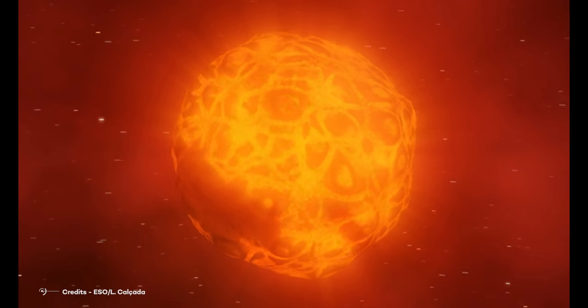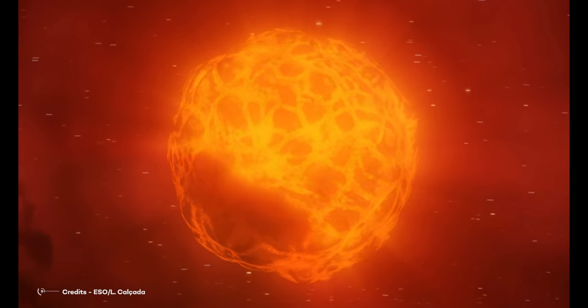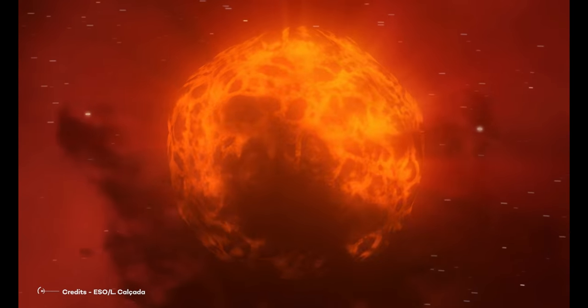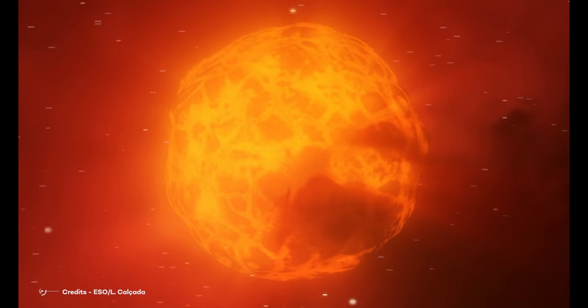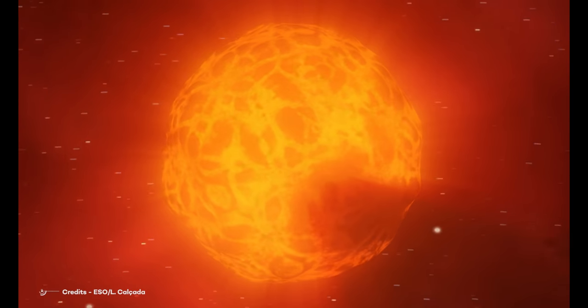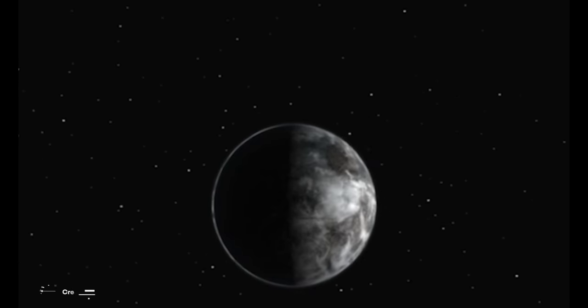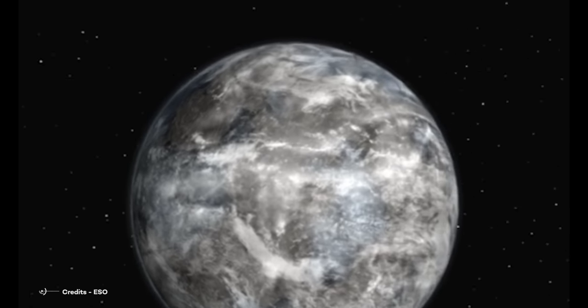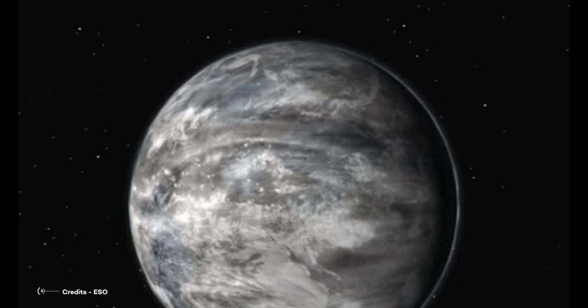Red dwarfs are also ideal targets for the search for low-mass planets where water could be liquid. Because such dwarfs emit less light, the habitable zone is much closer to them than it is around the Sun. Planets lying in this zone are then more easily detected with the radial velocity method, the most successful in detecting exoplanets.